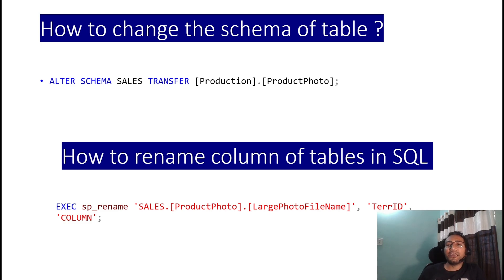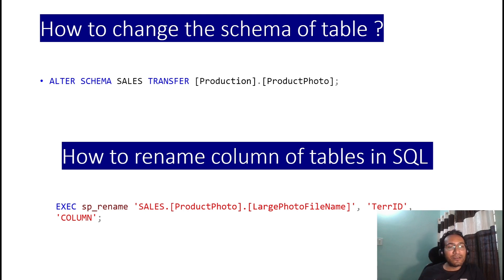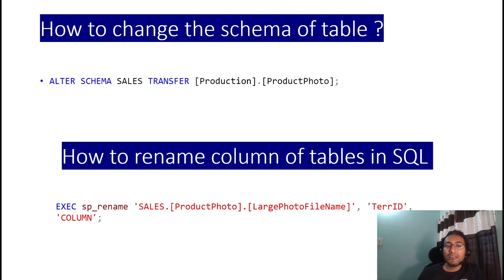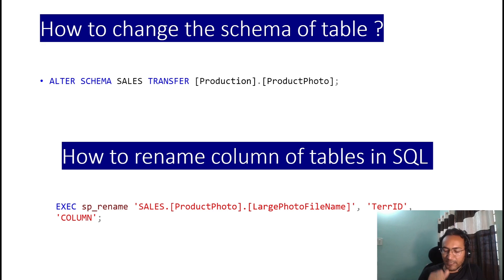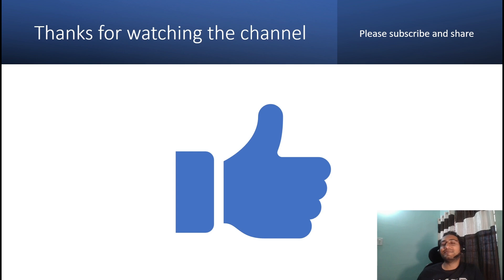Seventh question: how do you rename a column in a SQL table? You use the system stored procedure sp_rename. The syntax is: EXEC sp_rename 'schema.table.old_column_name', 'new_column_name', 'COLUMN'. For example, to rename the column 'LargePhotoFileName' to 'TerrorID', you pass the full source reference — schema, table, column — then the new name, and specify 'COLUMN' as the object type. You can do a proof-of-concept to verify it.